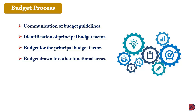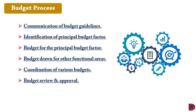The fourth stage is that respective managers for other functional areas develop their own budgets based on the principal budget factor. The fifth stage is coordination and review of budgets, where the various budgets drawn for individual departments are consolidated into a master budget and any anomalies are rectified.